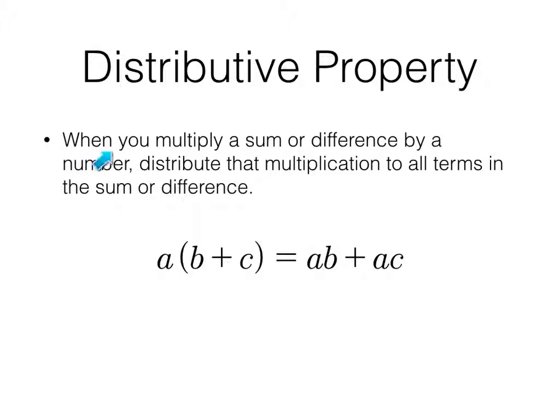The distributive property. When you multiply a sum or a difference by a number, distribute that multiplication to all terms in the sum or difference. Only when this is a sum or a difference right here. So A times the quantity B plus C is equal to A times B plus A times C. We make a little meow, meow, little double rainbow there. Let's think about if it was a difference in the middle there. A times the quantity B minus C would be A times B minus A times C. So again, we have our little meow, meow, double rainbow.